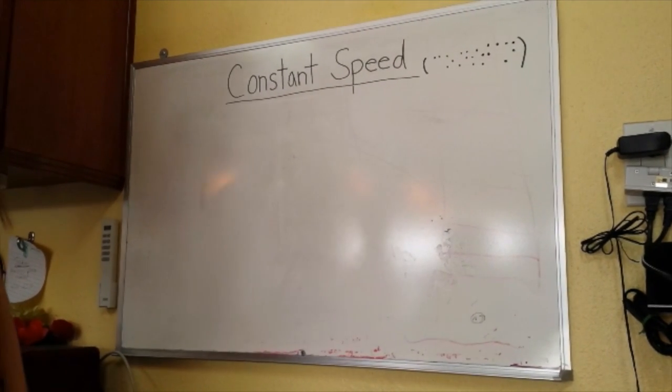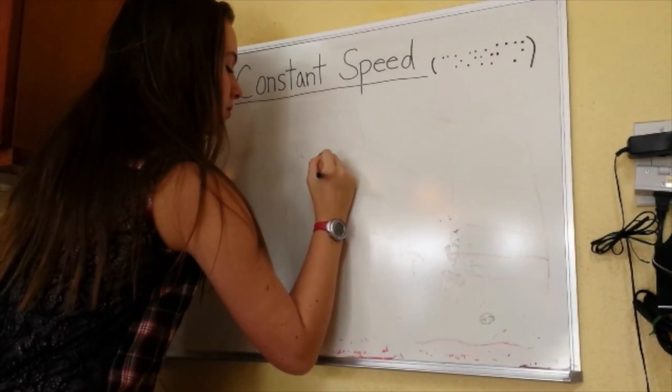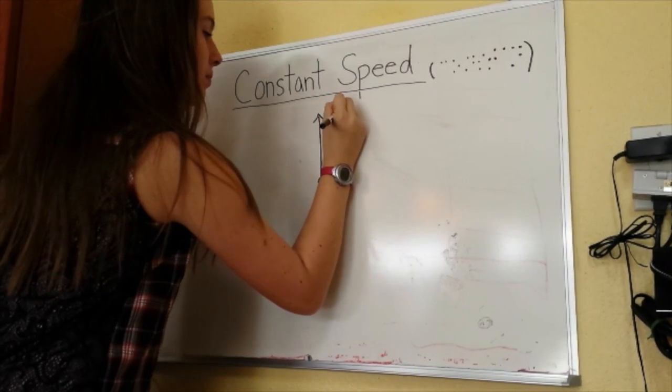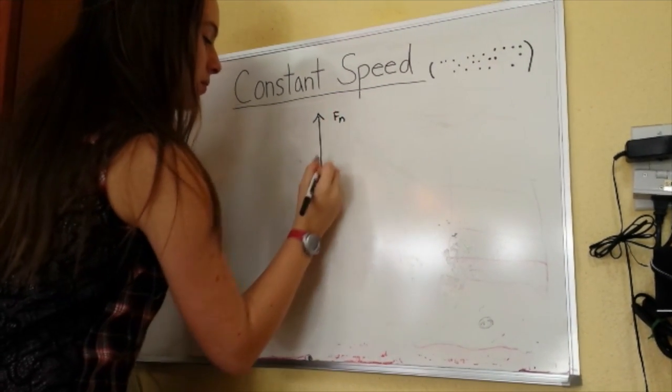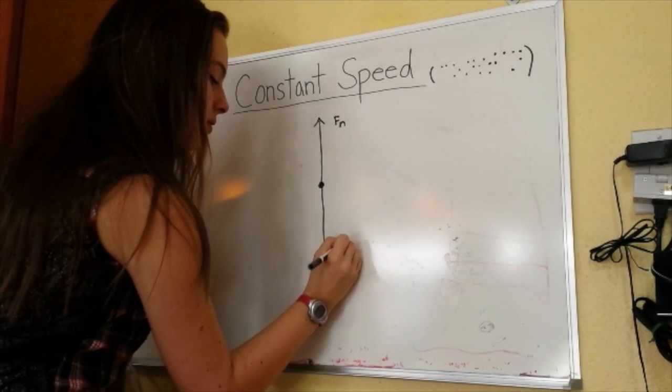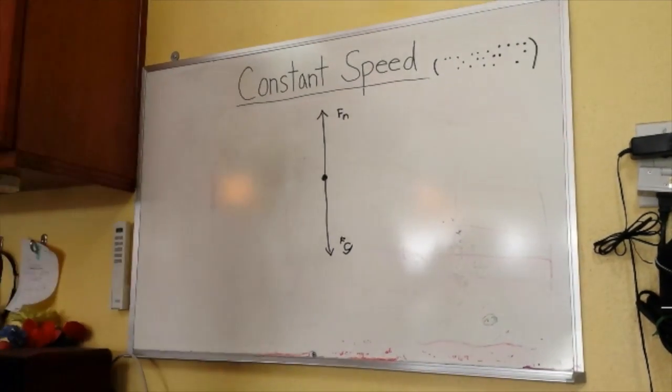On a free body diagram representing constant speed, the forces acting upon it are normal force and gravitational force. Similar to the diagram representing an object at rest, the vectors are equal in length, indicating that the forces are balanced. A balanced force can mean that the object is either at rest or at constant speed.